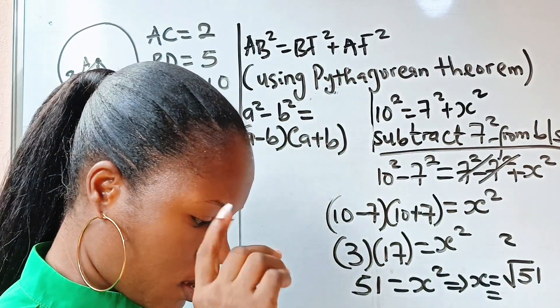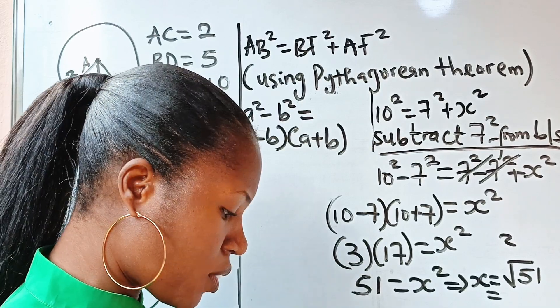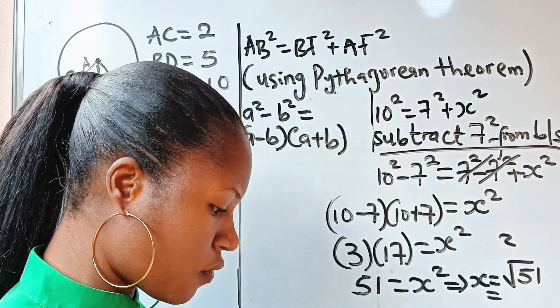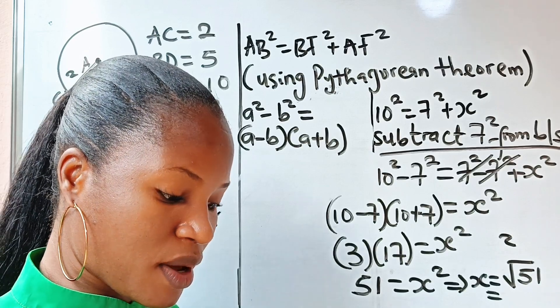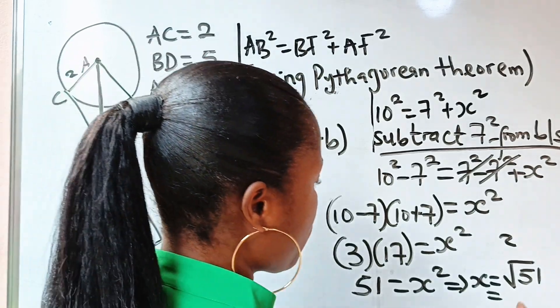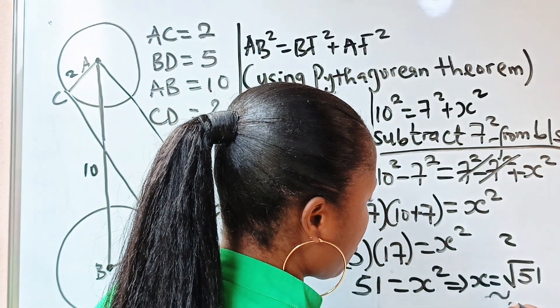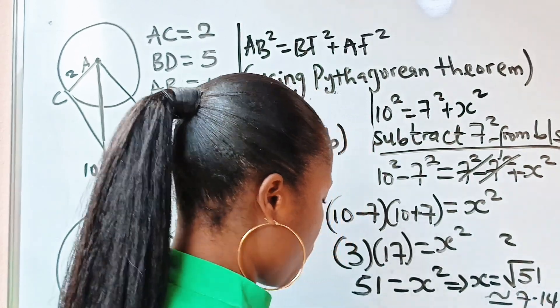Let's do that using our calculator because it's going to be in decimal. So square root of 51 is approximately 7.14, okay, is approximately 7.14 units.